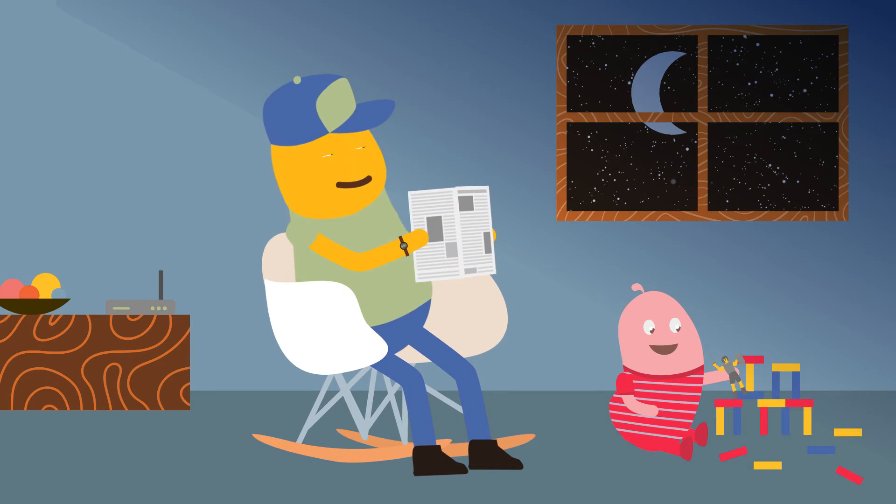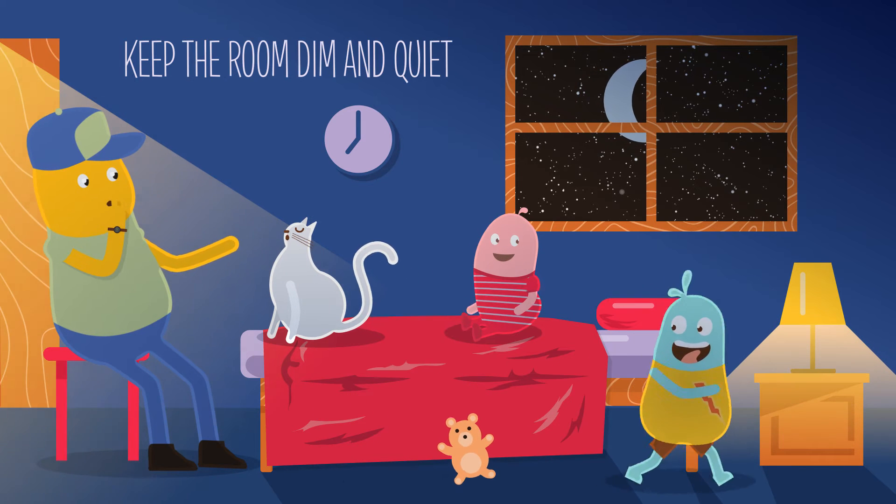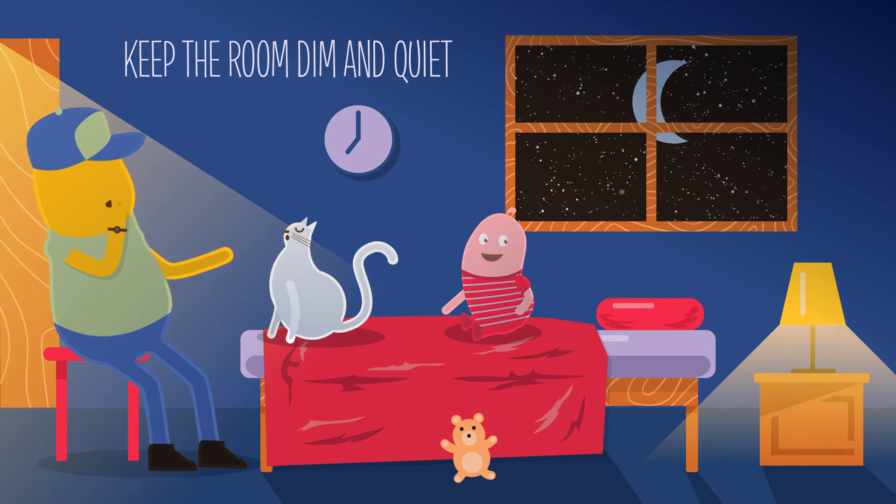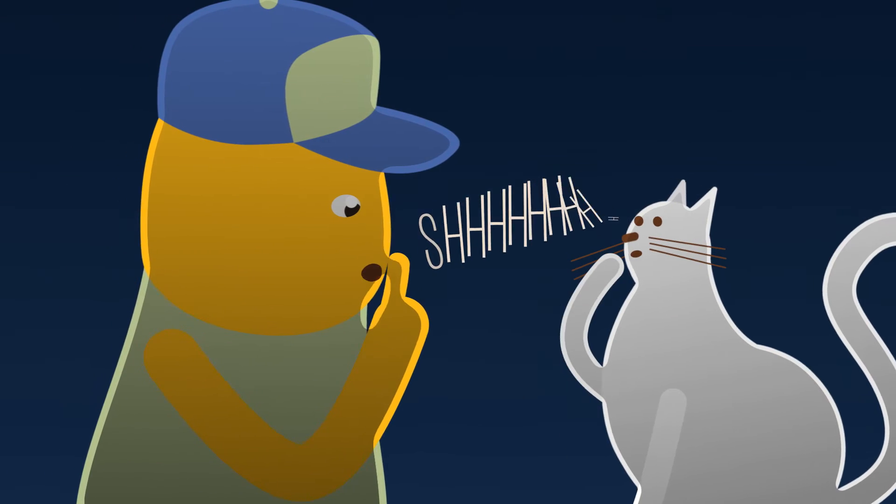Each night, give your child a bedtime reminder, then start your routine at the same time. Children are easily distracted, so keep the room dim and quiet, and ask everyone in the house to bring down the volume so your toddler doesn't feel he's missing out.